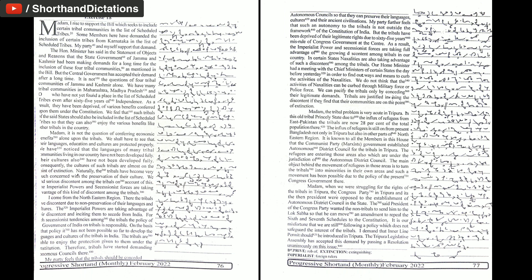The imperialist powers and secessionist forces are taking advantage of this kind of discontent among the tribals. I come from the northeast region. There, the tribals have discontent due to non-preservation of their languages and cultures. The imperialist powers are taking advantage of their discontent and inciting them to secede from India. For such secessionist tendencies among the tribals, the policy of the government of India on tribals is responsible. On the basis of that policy, it has not been possible for us to develop the languages and cultures of the tribals in India.